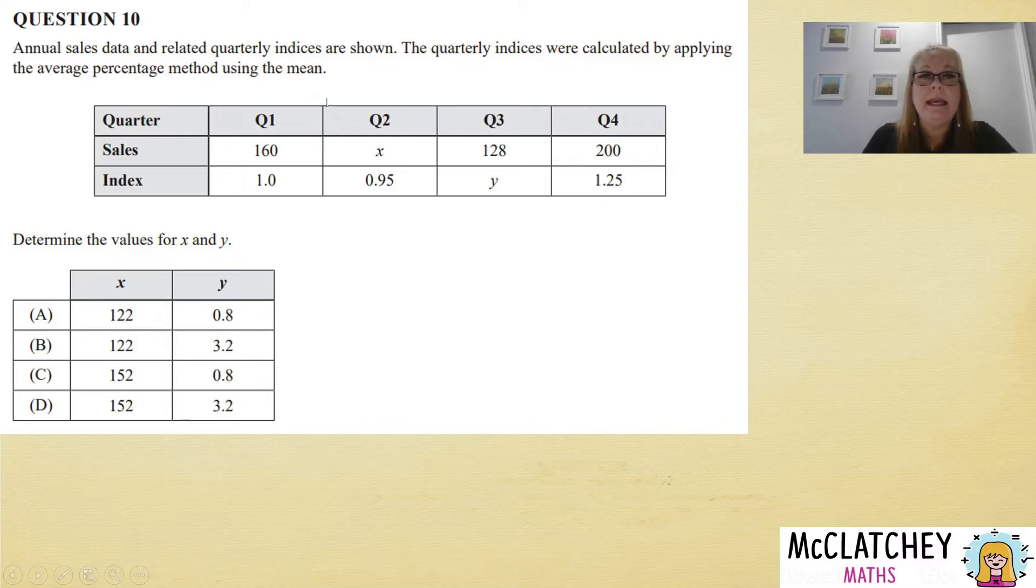Now, what they're telling us here with this average percentage method using the mean is that they've added these four numbers up and divided by four. That gives us an average. Then they've taken each one of these numbers and divided it by the average—that gives us our indices. If you need to know more about this, I would suggest jumping into my playlist on time series on how to discover and calculate seasonal indices. That will enlighten you a lot more, but I'm assuming you know a little bit about that, so let's jump in.